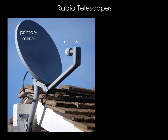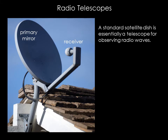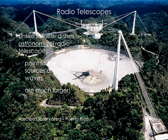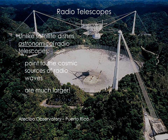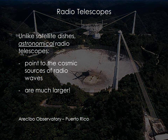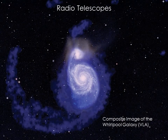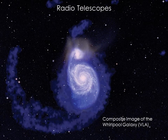You have probably seen television satellite dishes, or perhaps maybe you even have one. Every satellite dish is essentially a small radio telescope. The idea is the same as for a reflecting telescope: the metal dish is the mirror, and it is shaped to bring the radio waves to a focus in front of the dish at the receiver. The primary difference between satellite dishes and astronomical radio telescopes are where they look in the sky and their sizes. Dishes on the ground point to satellites in Earth orbit, while radio telescopes point towards cosmic radio sources.